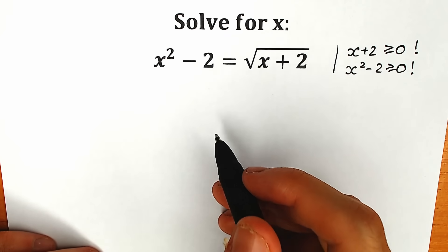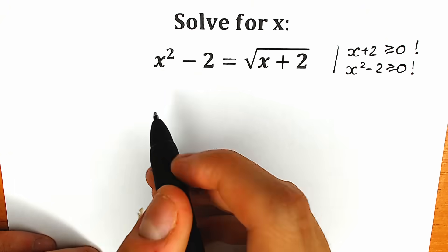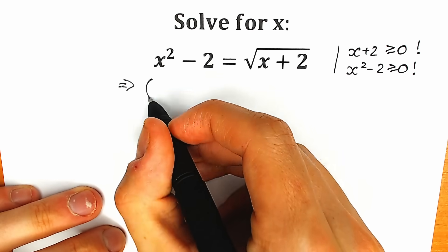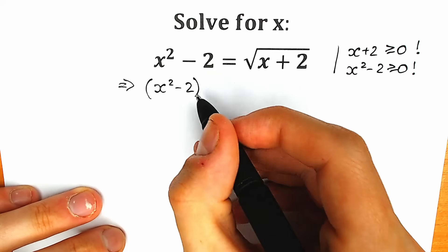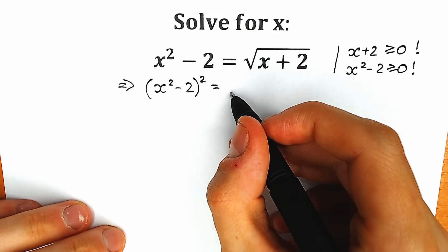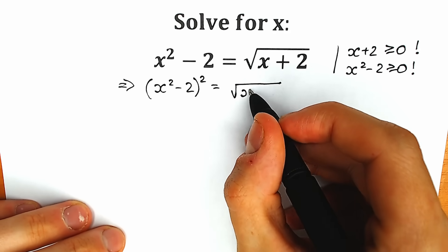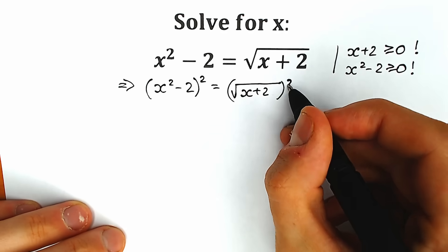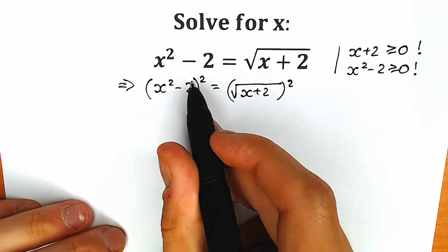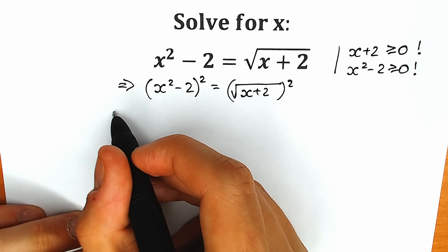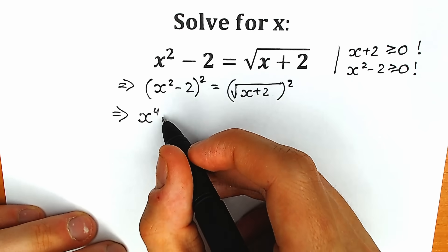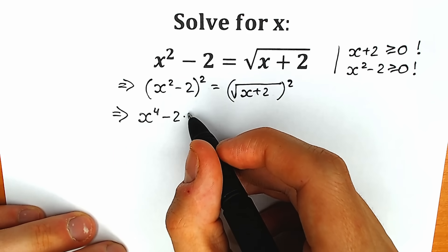Right now let's try to solve it. In most cases we just need to raise both sides to the second power. So we're going to raise our left side x²-2 to the second power, and raise our right side, the square root of x plus 2, to the second power. The square root and second power cancel on the right side. On the left side we have x to the power 4 minus 2 times 2 times x².